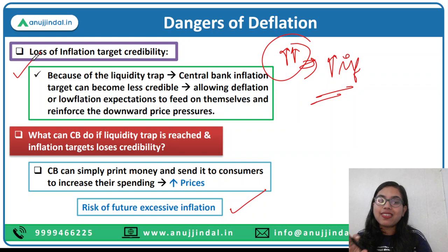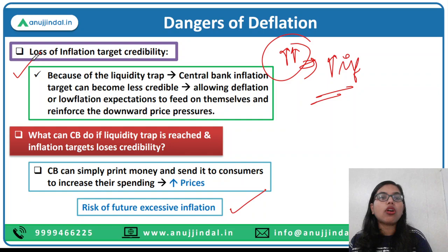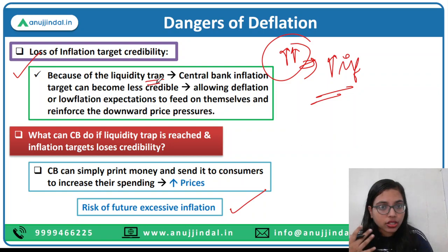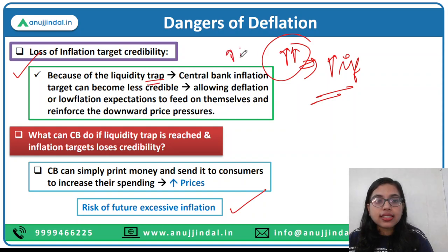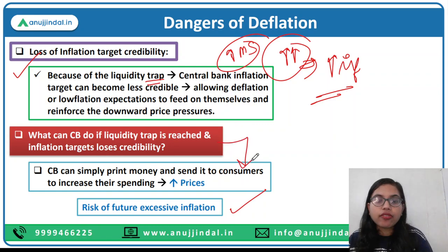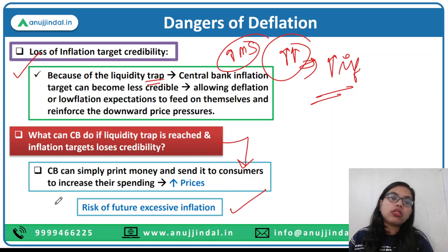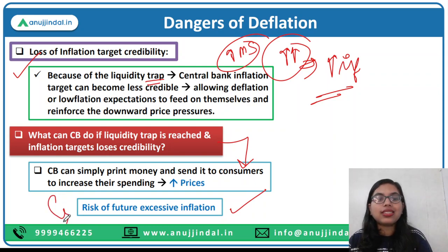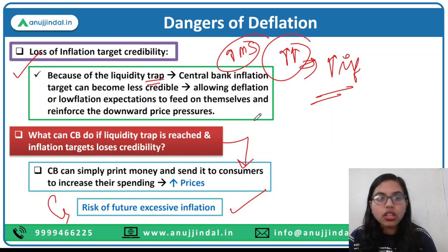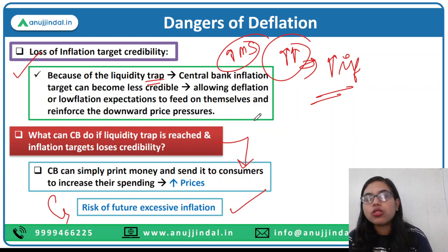The other problem related to deflation is loss of inflation target credibility. The credibility that the central bank has in targeting inflation will be reduced because of the liquidity trap it faces. Whatever monetary policy action it takes will not result in the desired outcome — to increase money supply. In that case, the central bank will simply have to print money. But printing money is also problematic because it will result in excessive future inflation. So these are the dangers of deflation. Inflation is also bad, but deflation is much worse.